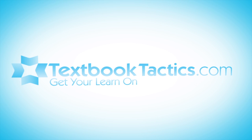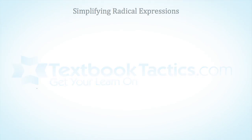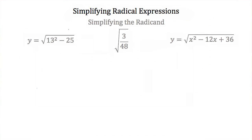This is a tutorial on simplifying radical expressions. The easiest method for simplifying a radical expression is just to simplify the radicand. The radicand is anything that's underneath the radical sign, or anything that's underneath the square root sign.